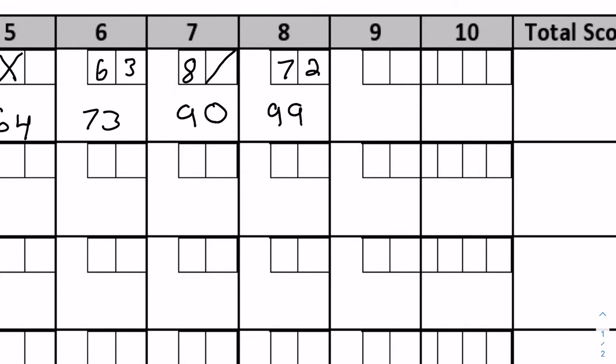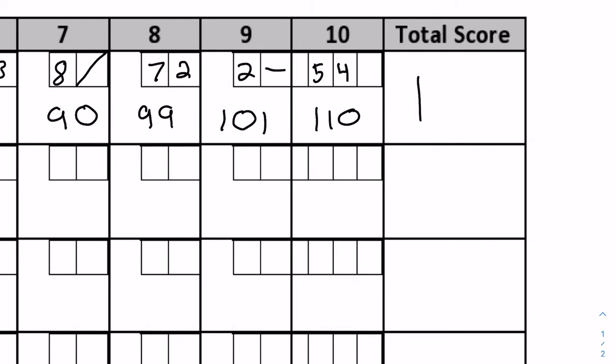In the ninth frame they get a two and then a gutter ball — for a gutter ball you draw a horizontal line — putting them at 101. In the tenth frame, remember you may throw up to three balls because you're guaranteed two extra balls after a strike or one extra ball after a spare. They get a five and then a four — nine points — giving a final total score of 110.